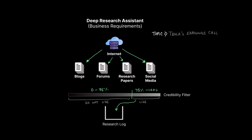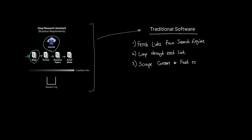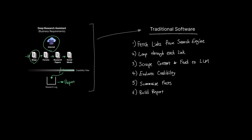Each source of information needs to surpass 75% in order to be deemed trustworthy, and the final step is to gather all credible data and build a report. In traditional software development, you have to write code that fetches links using a search engine API, loops through them manually, scrapes content and feeds it to an LLM, evaluates the score for each source, checks the score against the 75% threshold, and analyzes and stores facts into a report — and you also have to orchestrate the sequence in which all this code runs.